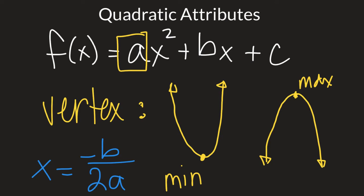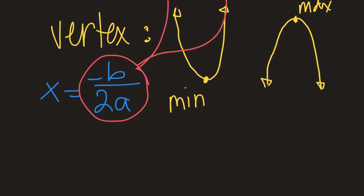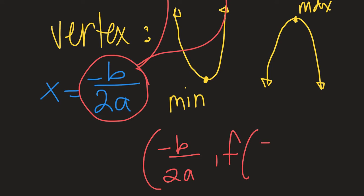You evaluate that and it gives you the X coordinate of your vertex, because every vertex has two parts — an X part and a Y part. Then you find the Y part by plugging your X value back into your formula, replacing all the X's with that coordinate. Whatever number you get is the Y value for your vertex. Formally written, the vertex is: negative B over 2A, comma, F of negative B over 2A.